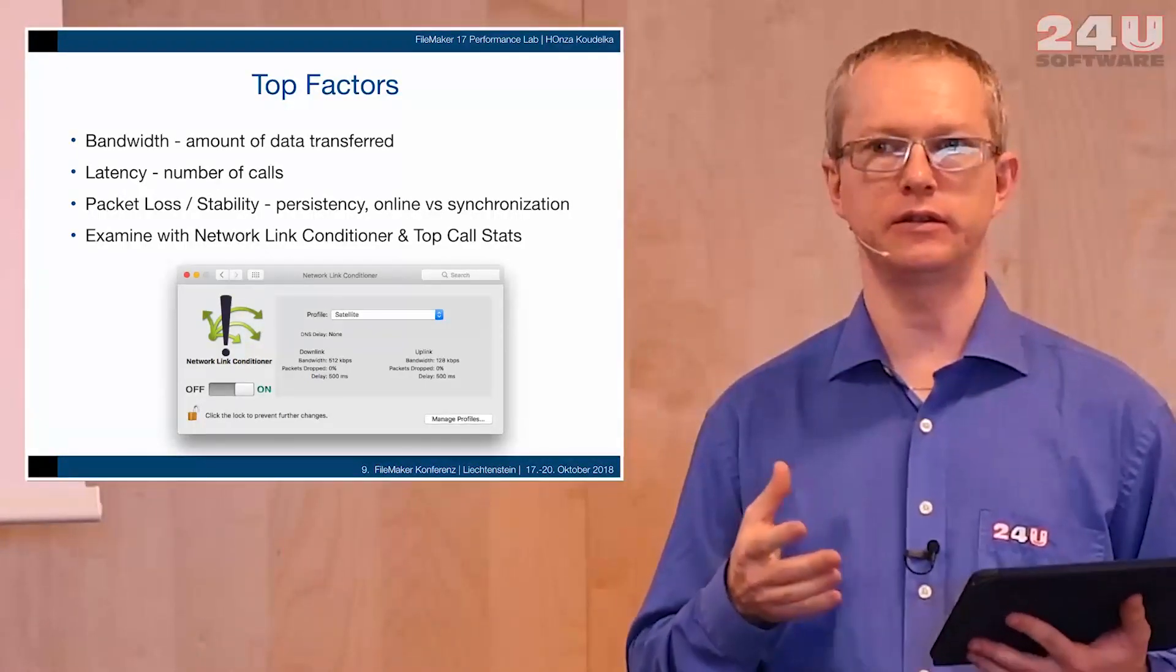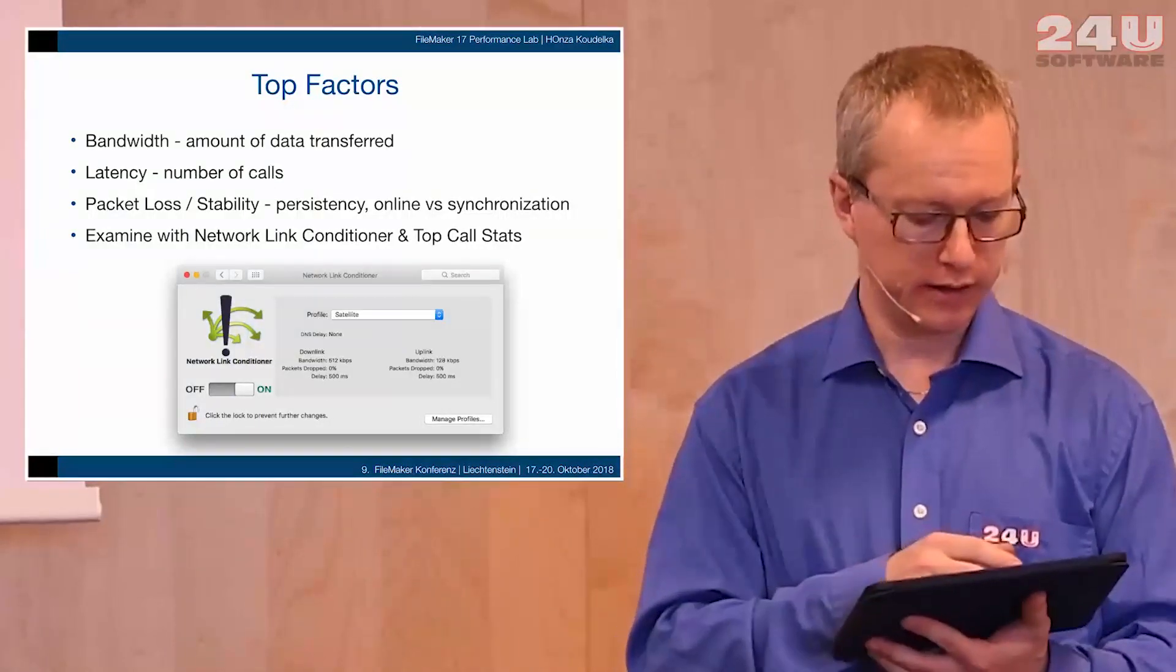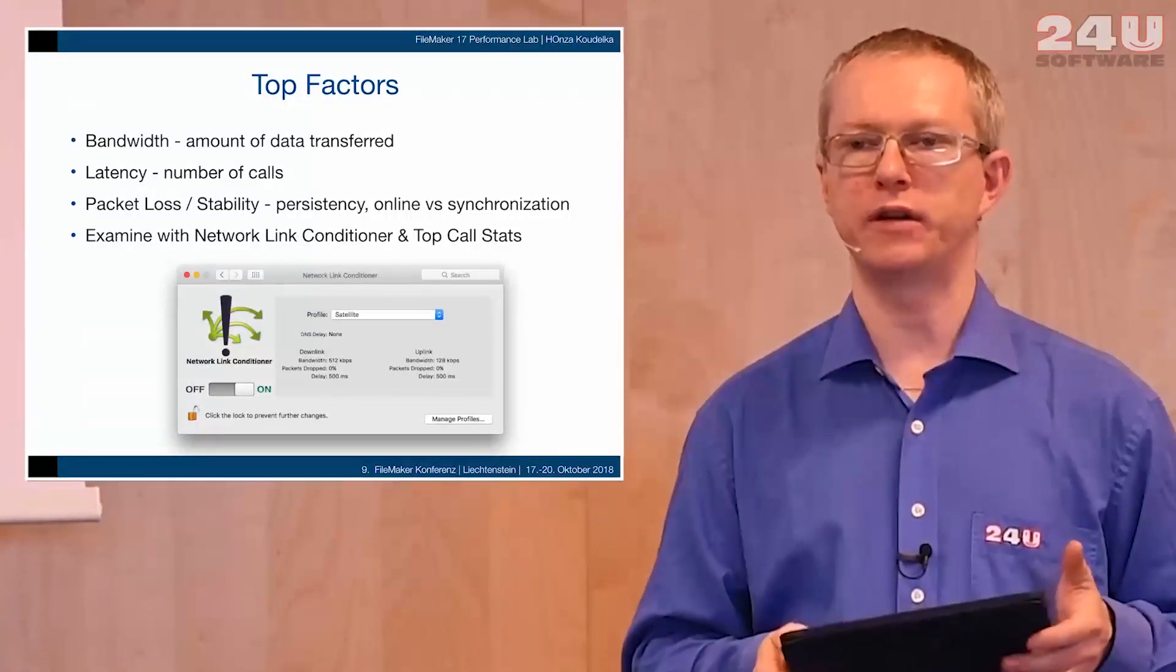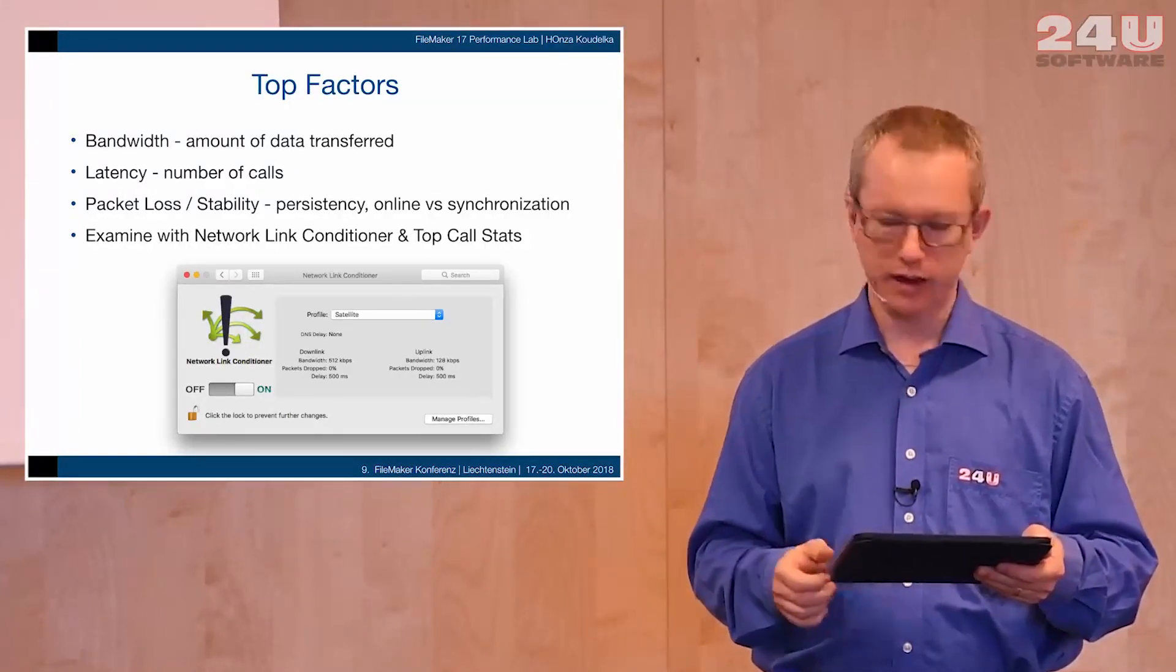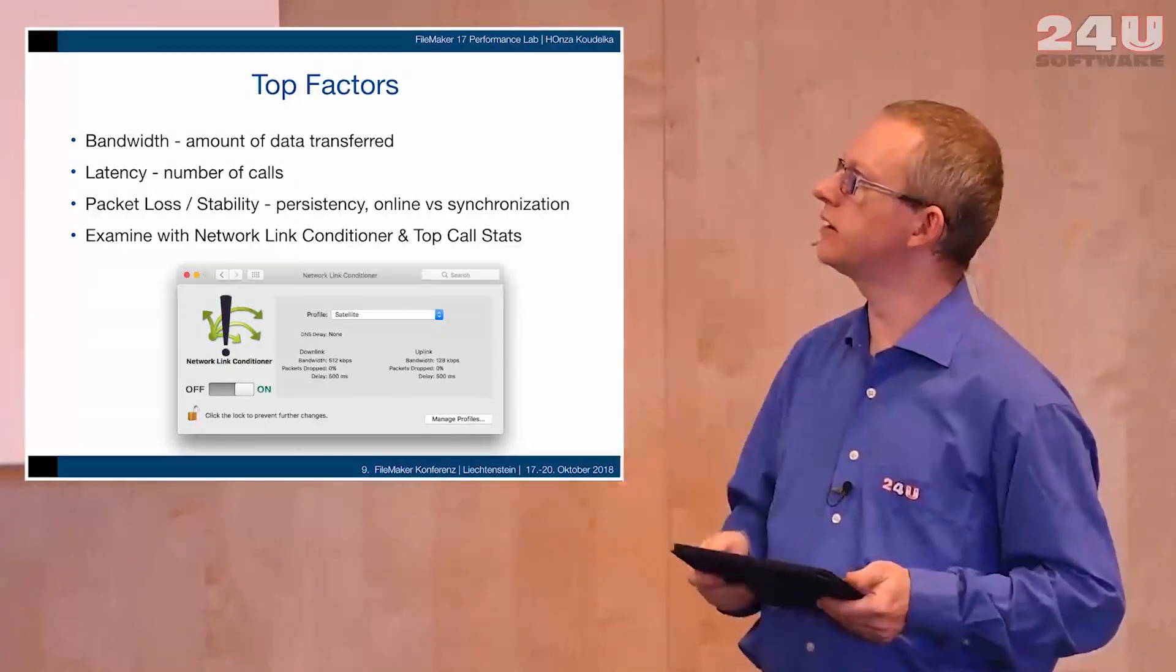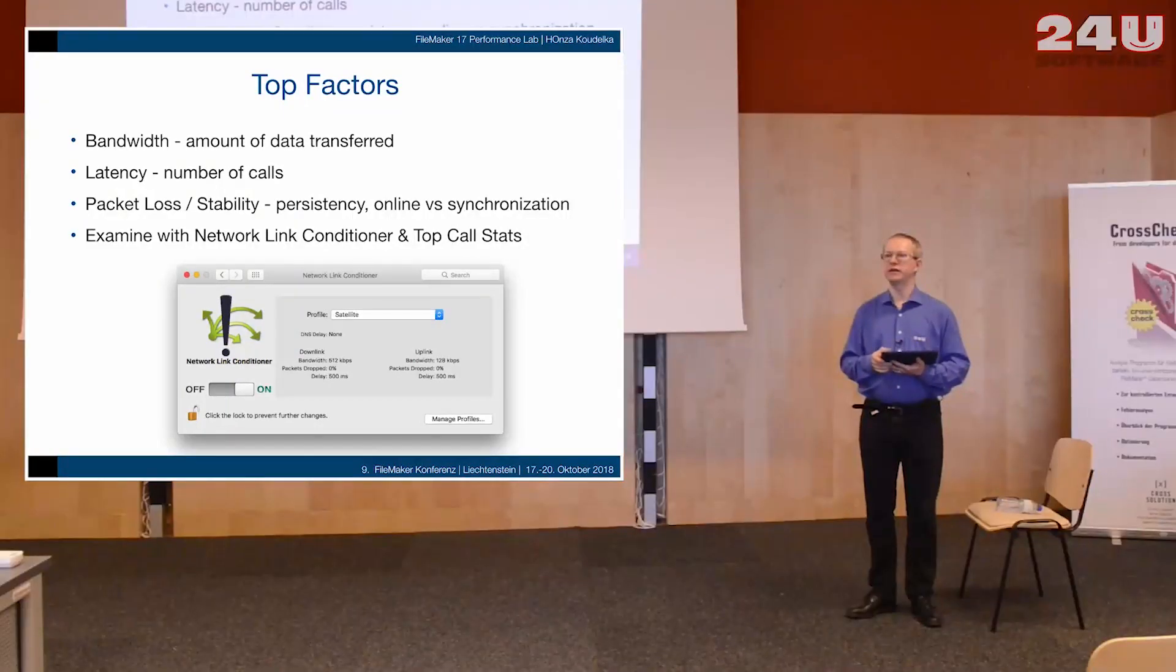How we deal with it in a technical environment: we found one or two tools to be the most efficient to find out where is the biggest impact of the network slowness or network speed. One of the tools is Network Link Conditioner, a tool that comes from Apple, and the other is Top Call Statistics. When you slow the network down enough and set the Top Call Statistics to trigger every one second, you get 25 calls per second logged. If the connection is so bad that FileMaker cannot send more than 25 calls to the server per second, then you get everything in the Top Call Stats.